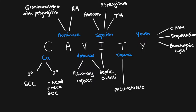Now we're on to our last two letters: T for trauma and Y for youth. In trauma we're talking about traumatic pneumatoceles. These occur in blunt trauma due to shearing forces which cause lacerations within the lungs; air gets trapped within the lacerations and they look like cysts on CT but are actually traumatic pneumatoceles. With Y we're talking about congenital lesions which are gas-filled: CPAM, sequestration, and bronchogenic cysts.